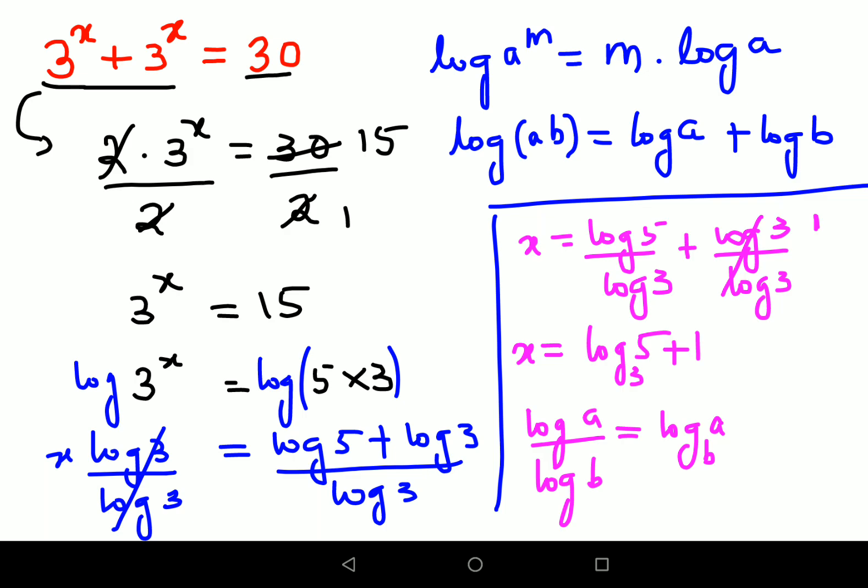Another way is if they had given you the values or they had given you the log table, then this becomes log 5 value which is 0.699 upon log 3 value which is 0.477 plus 1. On division this value comes out to be 0.465 plus 1.